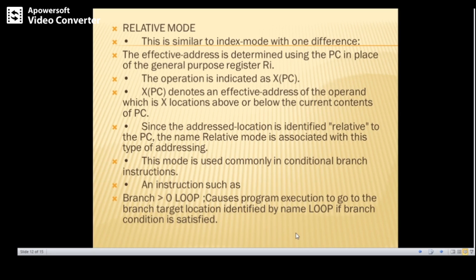Relative mode depends on the content of the program counter (PC). The operation is written as X(PC), meaning the operand is present X distance away from the current location of the PC. EA = X + content of PC. Since the address is identified relative to the PC, this is called relative addressing mode.